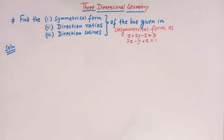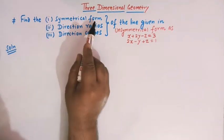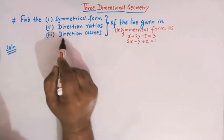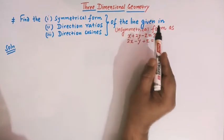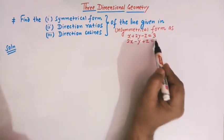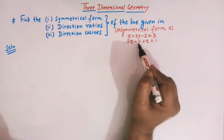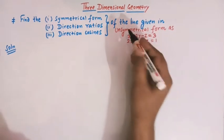Hello viewers. In today's class we are going to take up one conceptual problem from three dimensional geometry. We are dealing with the concept of line, and we have to find the symmetrical form, the direction ratios and the direction cosines of a line which is given in unsymmetrical form as two equations.